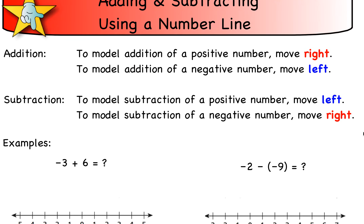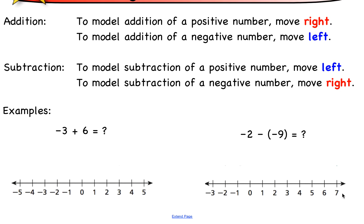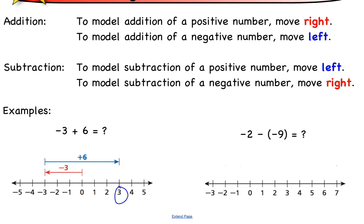Let me show you what I mean on a number line. The first example is negative three plus six. We start at zero, go left three to negative three. Then we're adding a positive number, so we go right six from negative three, and we end up at positive three. So that's our answer.